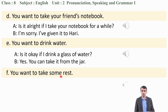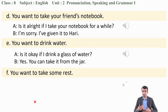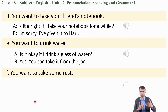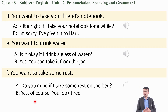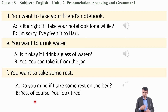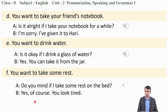Situation F: you want to take some rest. When you are in someone's house and want to rest, ask for permission. 'Do you mind if I take some rest on the bed?' — 'Yes, of course, you look tired.' That way you can ask for permission and give permission.